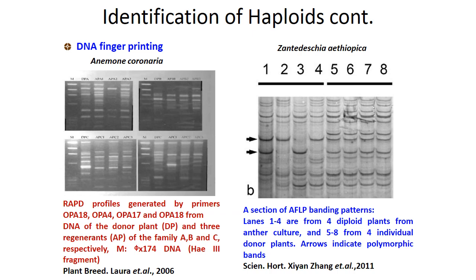In these techniques, haploids are identified based on number of bands produced per lane. When SSR markers are used to identify haploids, the known flanking markers must be reported, and that will give the exact haploid or ploidy level.